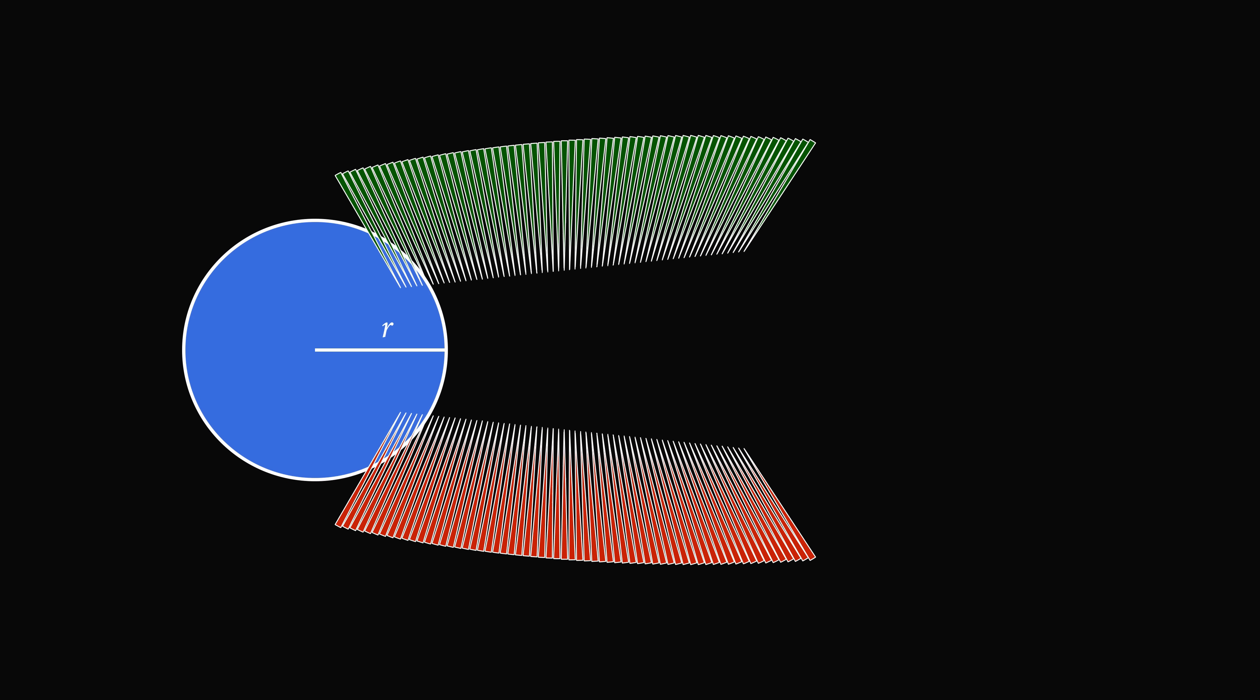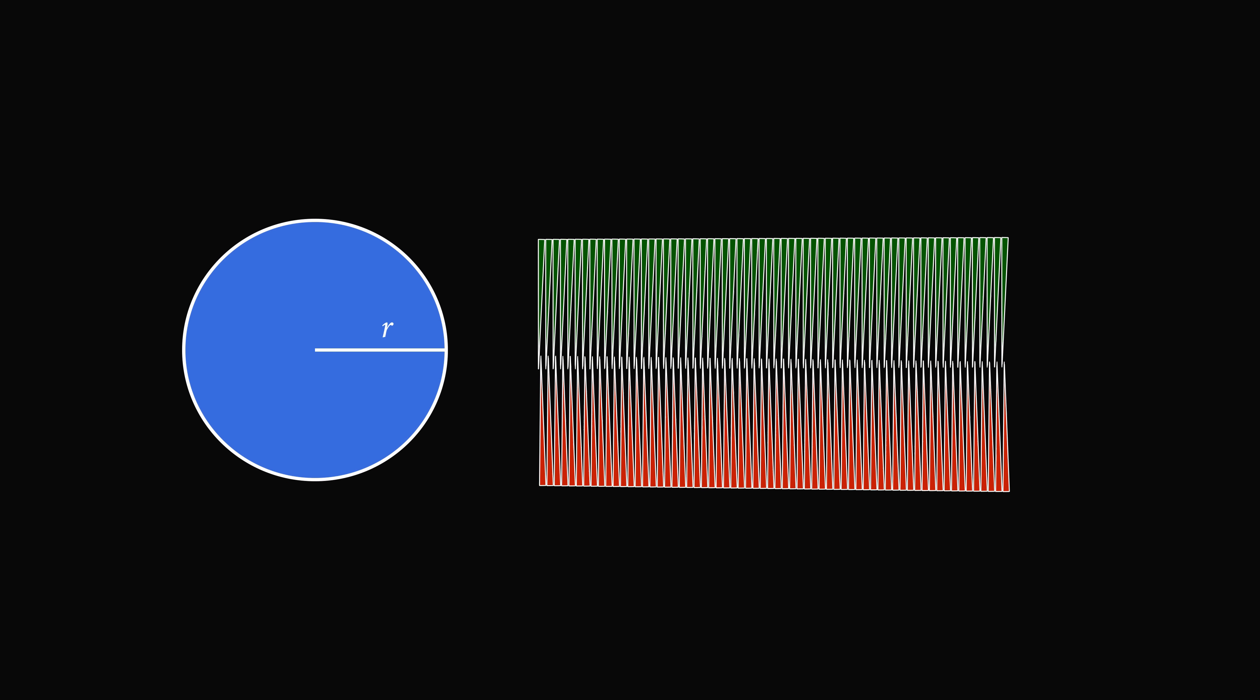Now we can think about this process in the limiting case. If we have infinitely thin slices, and we interweave these slices together of one half of the circle with the other half, we're going to end up with a rectangle.